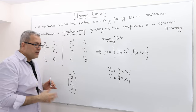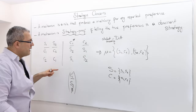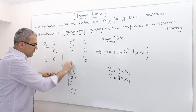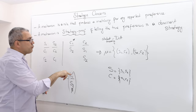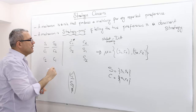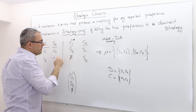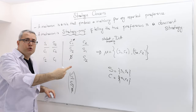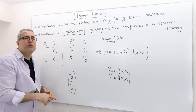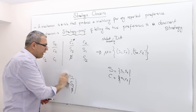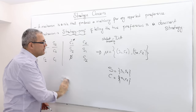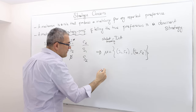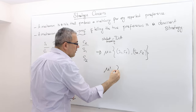Now suppose College 1 says only Student 2 is acceptable — let's call this C1 prime. So College 1 lies about its true ranking, declaring that only Student 2 is acceptable. What is going to happen in this case? Let's call the resulting matching Mu prime and solve it. We use exactly the same mechanism: student-proposing deferred acceptance.